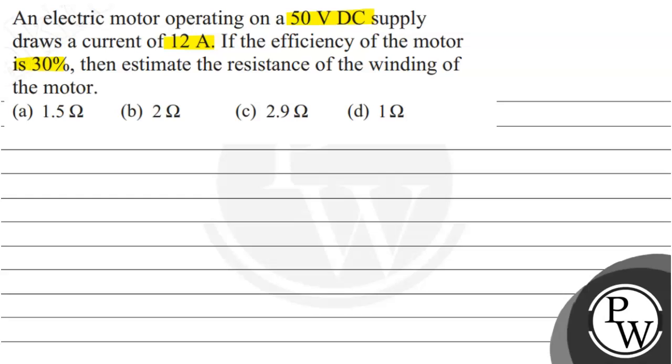So the voltage given is 50 volt and current is 12 ampere and the efficiency of the motor is 30 percent, and we have to find the resistance value. So this question is related to a key concept. I will tell you about the key concept.